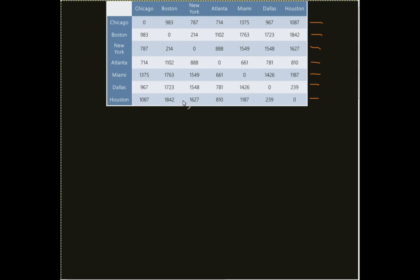We actually work the same way. If we thought about this as just one group of elements, for example Chicago, I would come in here and do a traditional array. Okay, int square bracket Chicago equals curly brace 0, 983, 787, 714, 1375, 967, 1887.